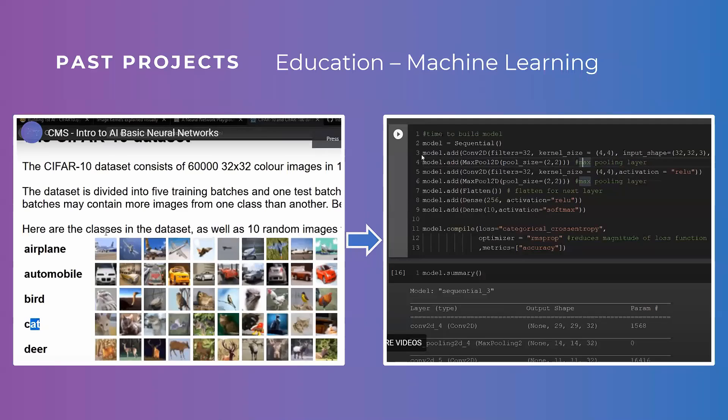A popular example we used is the CIFAR-10 dataset, which has about 60,000 images across 10 different classes — airplane, car, bird, and so on. What we try to do is train an AI to understand what's in each image and properly classify them. On screen you can see the architecture of the AI — we use what's called a convolutional network to break down images and detect features, and the AI classifies based on those features.